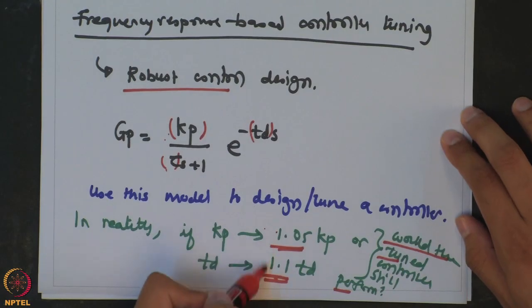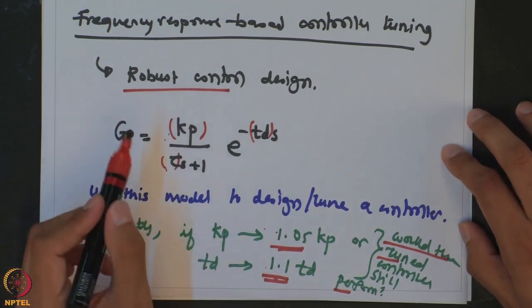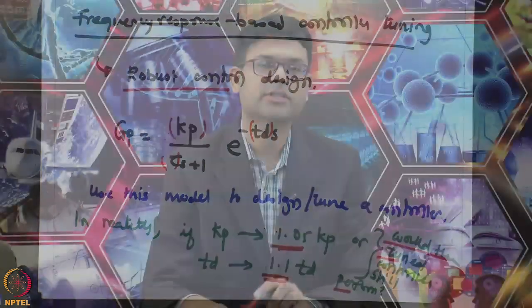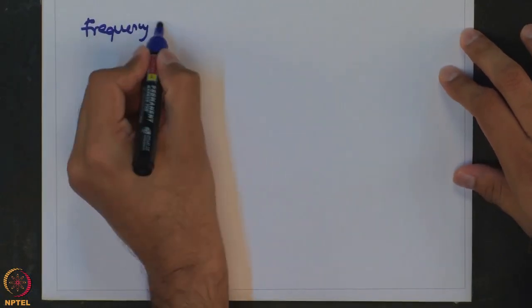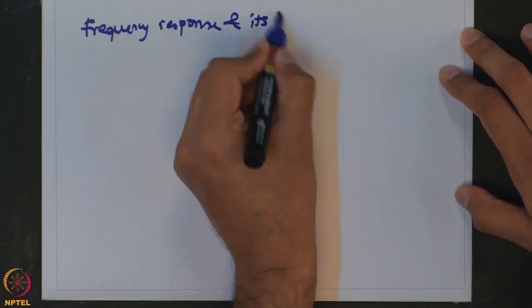When you want to design a controller that allows a certain freedom in terms of variations in the process parameters, that method is known as robust controller design. We will see how such a controller can be tuned using frequency response. For that, we will revisit what frequency response is and its relation to stability.